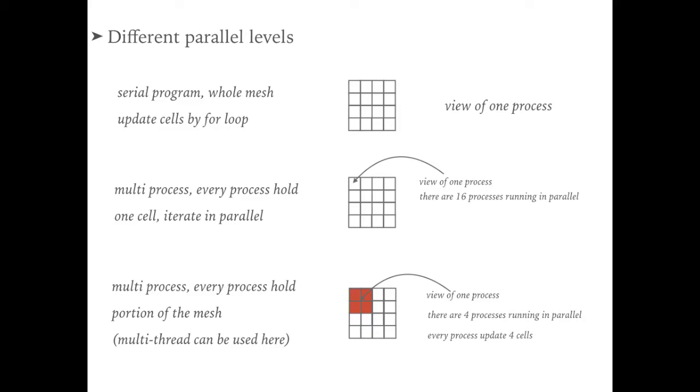For the second one, if there are multiple processes, one extreme case is that every process will hold one cell. For example here, we have 16 processes, and every process is responsible to update the value in one cell.